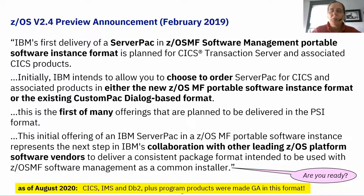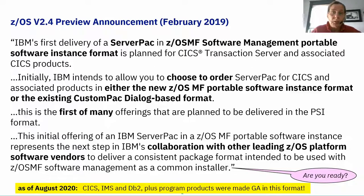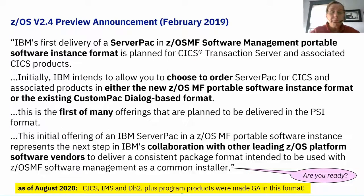Subsequently we delivered CICS first, and as you can see at the bottom of this chart we've also moved on to IMS and DB2 as well. Today within IBM we have CICS, IMS, and DB2 all available in the traditional ServerPac — which you can install with ISPF — or in the new Portable Software Instance format for ServerPac, which you consume using ZOS MF Software Management.